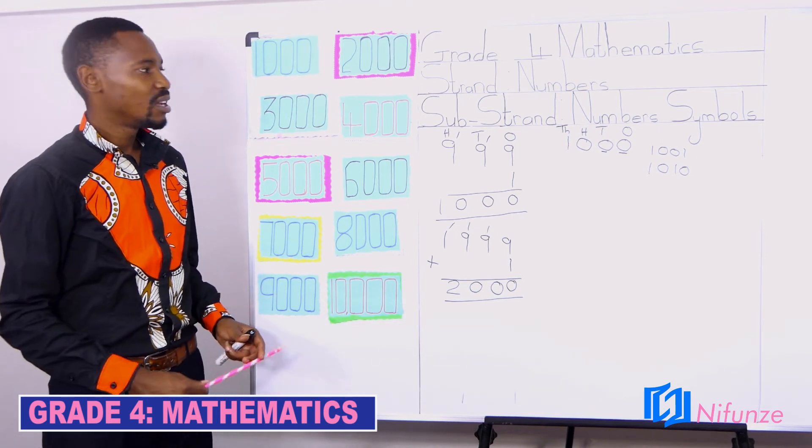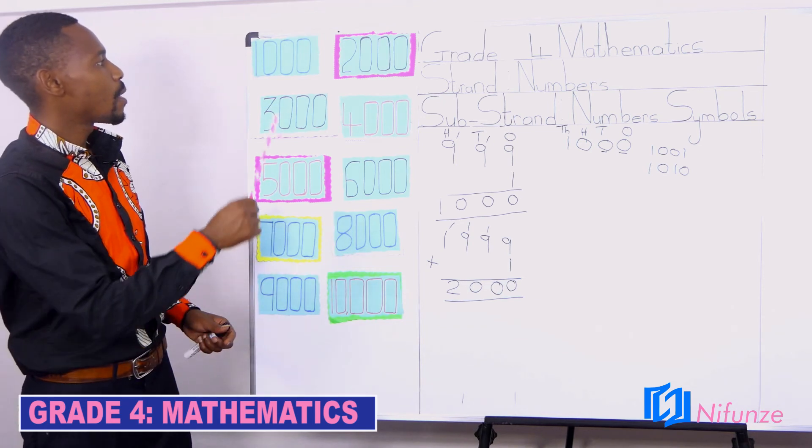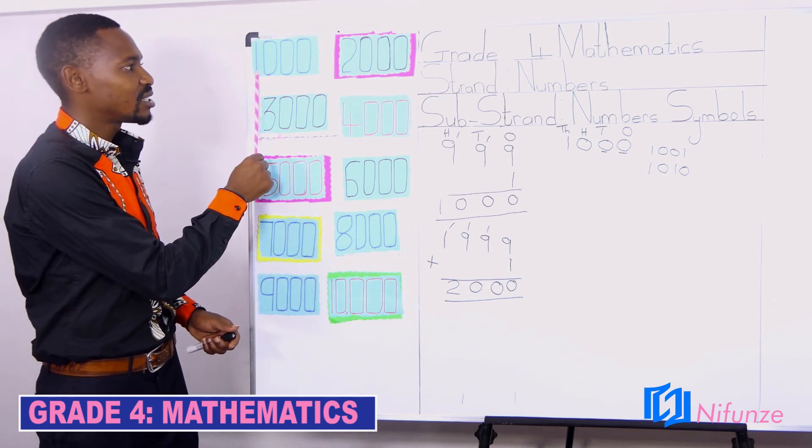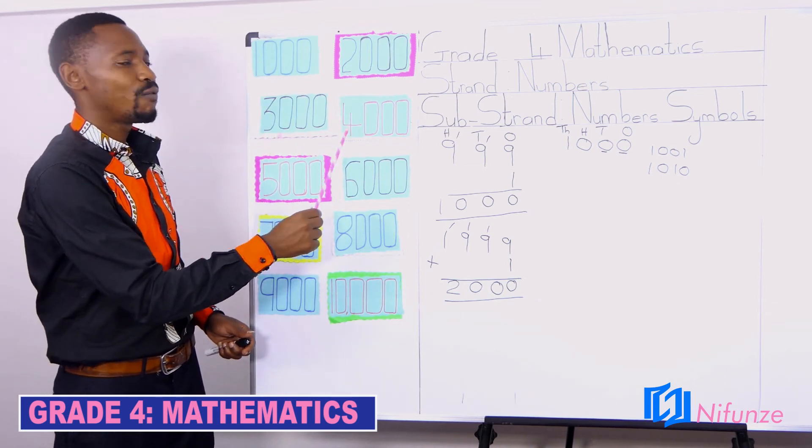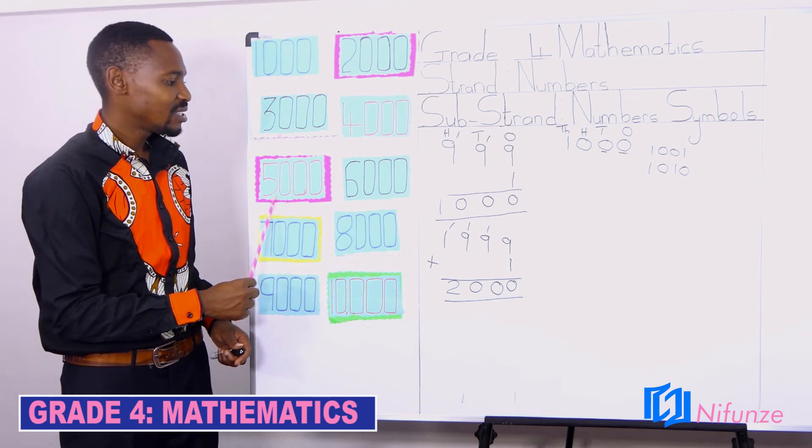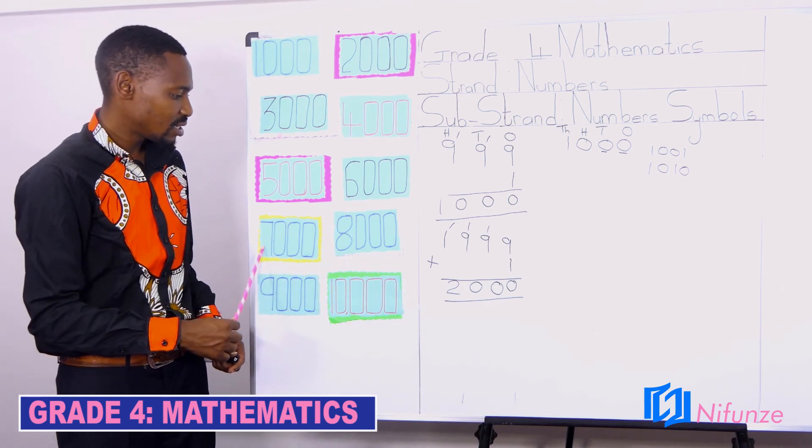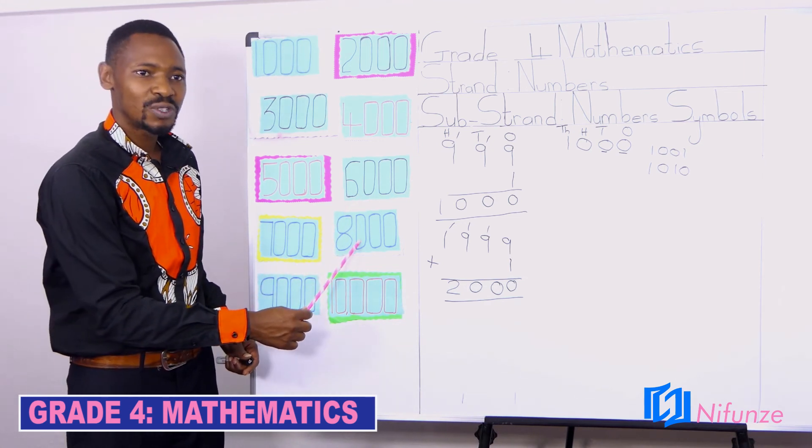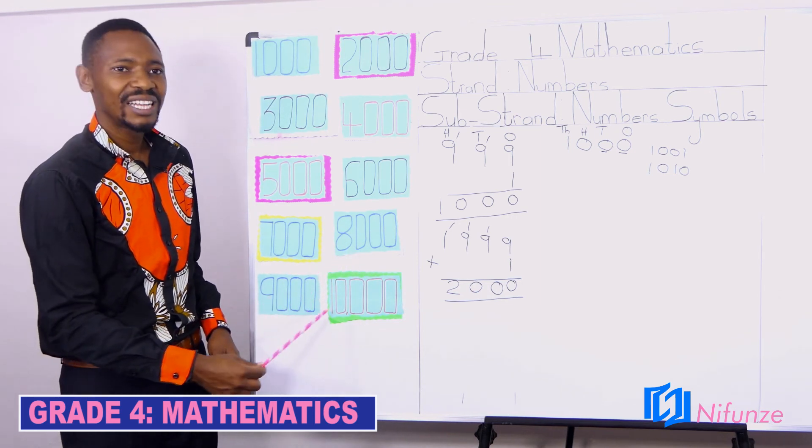Now, let us read these numbers. 1,000, 2,000, 3,000, 4,000, 5,000, 6,000, 7,000, 8,000, 9,000, and 10,000.